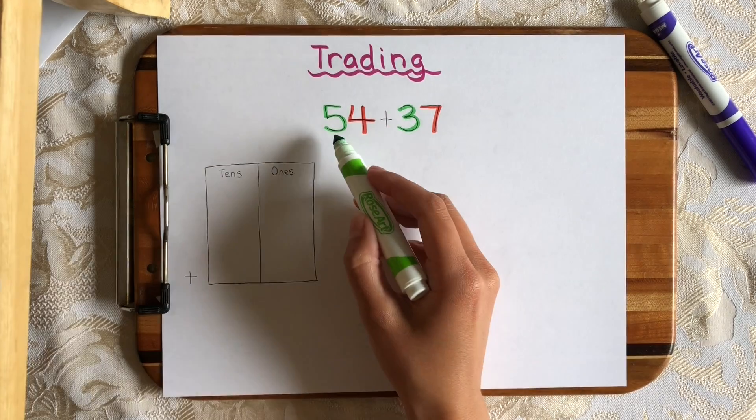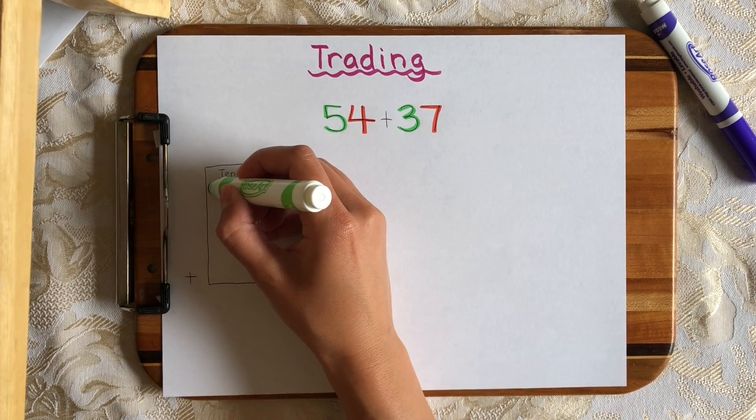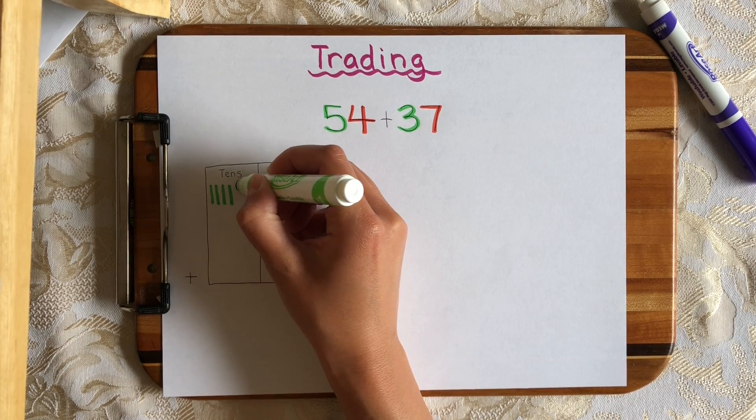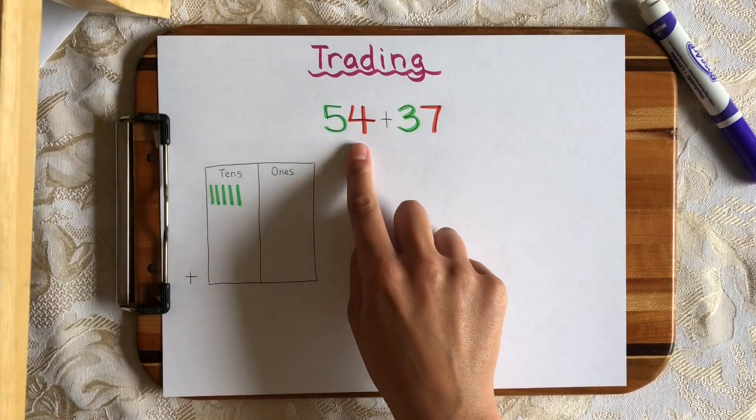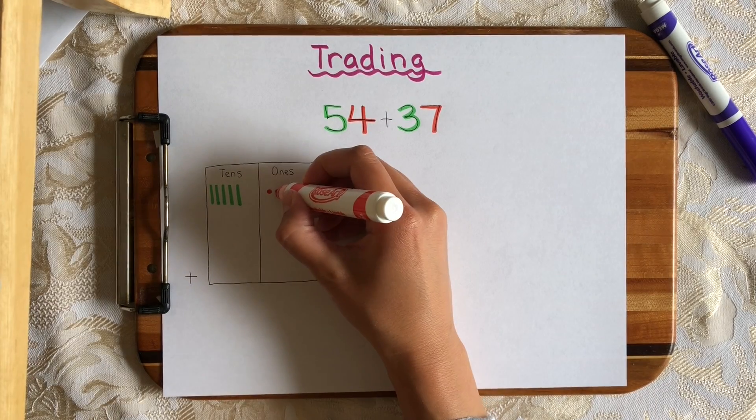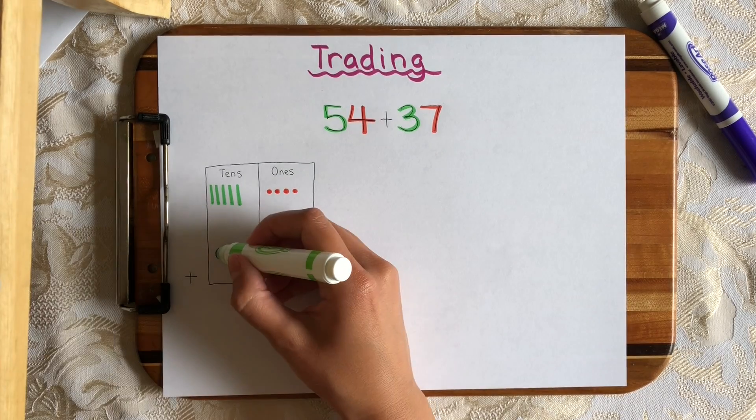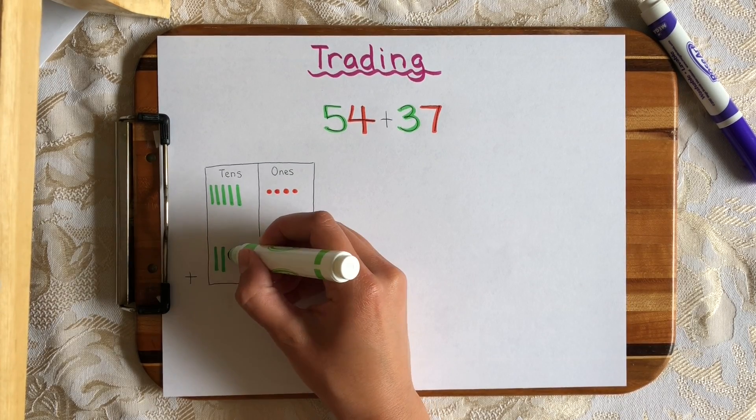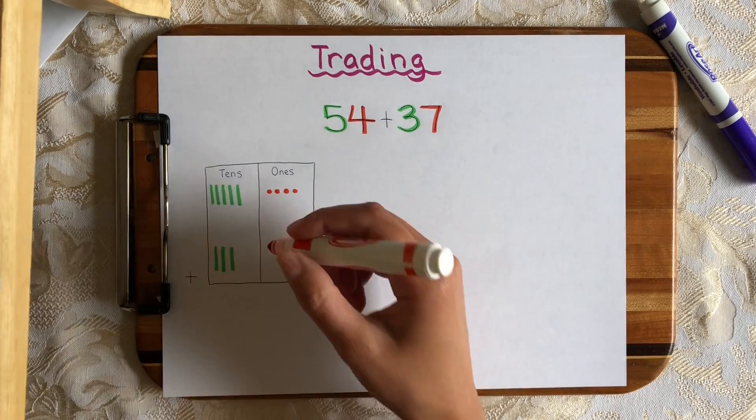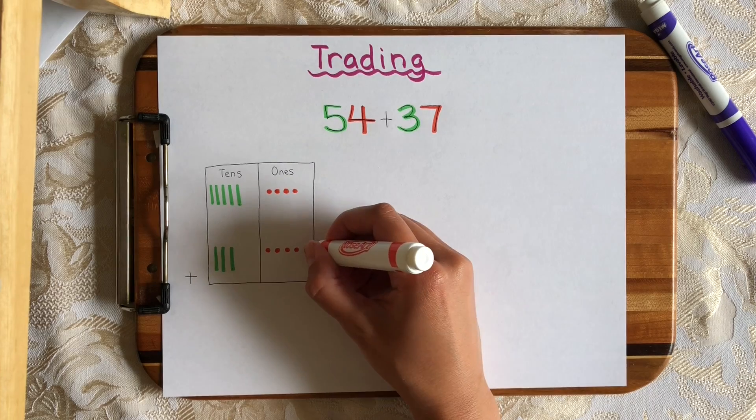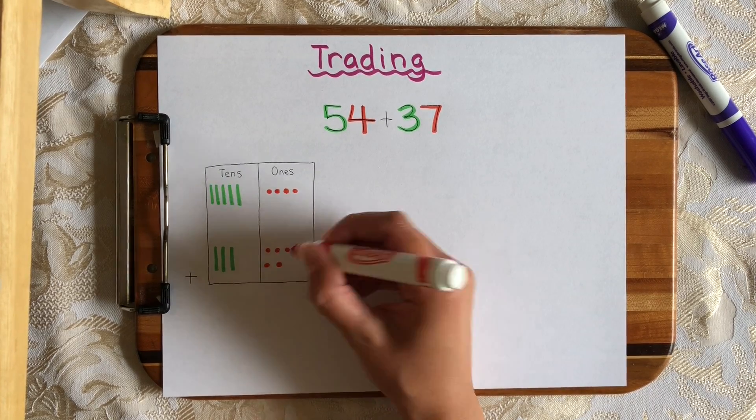Let's go ahead and show that here in my tens and ones house, starting with 54. So 54 has five tens, just lines. 1, 2, 3, 4, 5. And four ones. 1, 2, 3, 4. Now let's write 37 down here, three tens. 1, 2, 3, and 7 ones. 1, 2, 3, 4, 5, 6, 7.